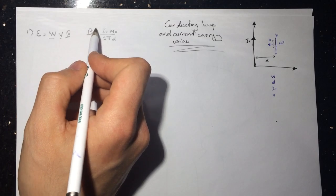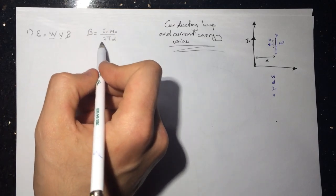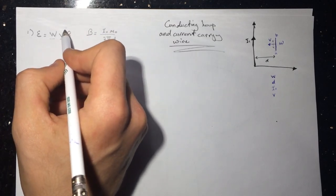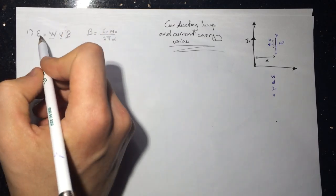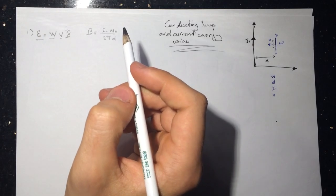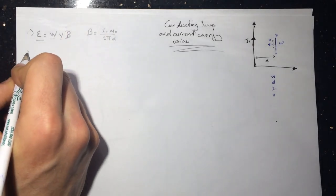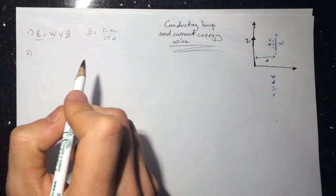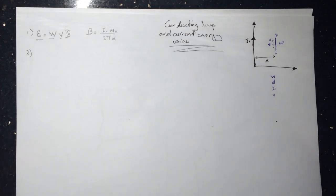Just substitute the value of B into the EMF formula and you'll get the induced EMF. Question two asks for the EMF induced in the moving wire at t equals 4.5 seconds.